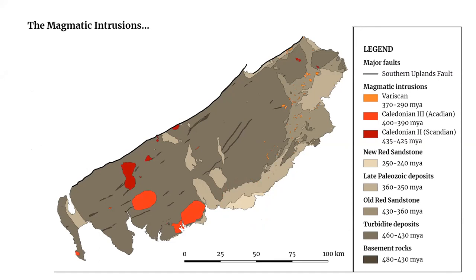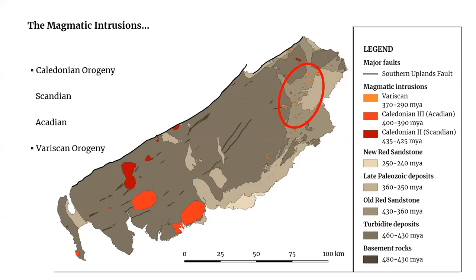The coloured areas on this map are represented by magmatic intrusions. The dark red and bright red areas are Caledonian intrusions — the dark red ones were emplaced during the Scandian phase, while the bright red ones were emplaced during the Acadian phase. There is also a multitude of orange areas concentrated in one region, mostly intruding the Old Red Sandstone. They represent plutonic rocks emplaced during the Variscan orogeny, which marks the assembly of the supercontinent Pangaea. These intrusions are coeval with the Late Palaeozoic deposits.